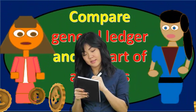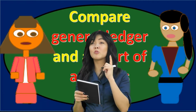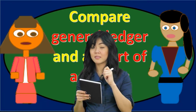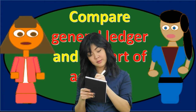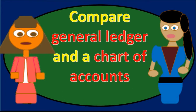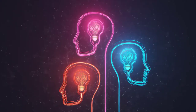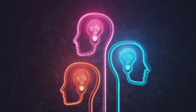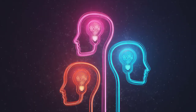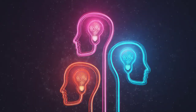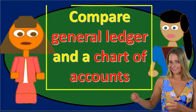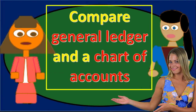These are two items that can often be confused when first learning the process, so we want to keep them differentiated in our minds. Looking at the chart of accounts first, because it's pretty much self-explanatory — the chart of accounts is going to list the accounts that will be involved.